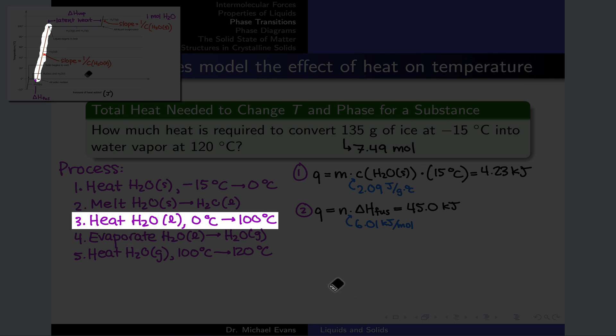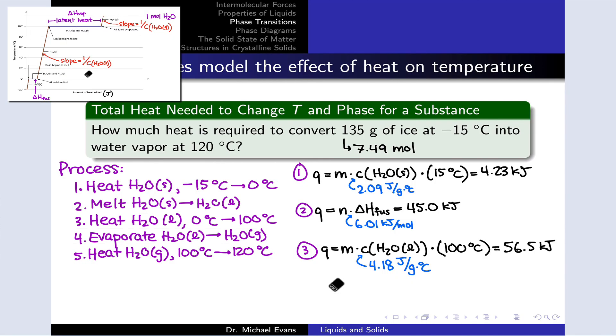Next, we're going to heat the liquid water from zero to 100 degrees C. And we're back to an MC delta T situation now with a different specific heat, 4.18, the specific heat of liquid water, pretty famous number. 100 degrees C is my delta T and my mass is still 135 grams. And this is even larger than the enthalpy required or the heat required to melt the solid into liquid.